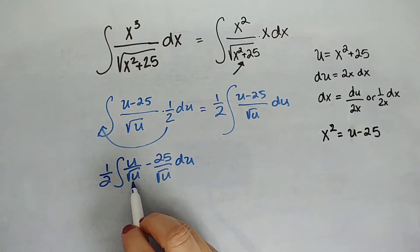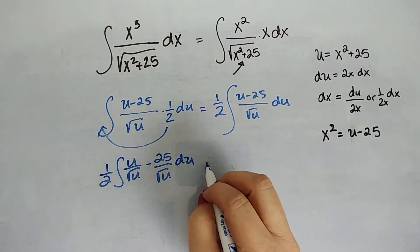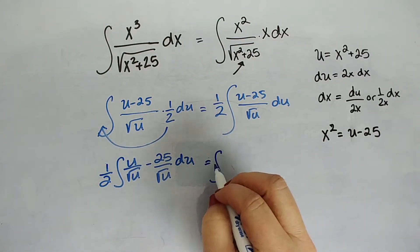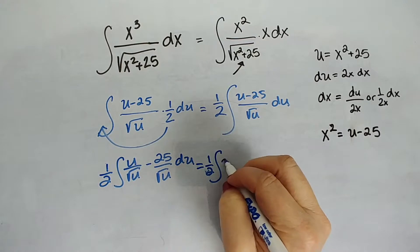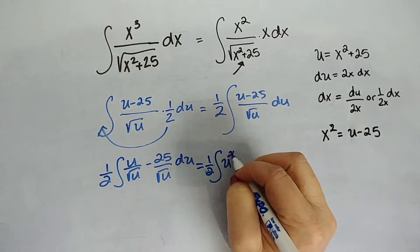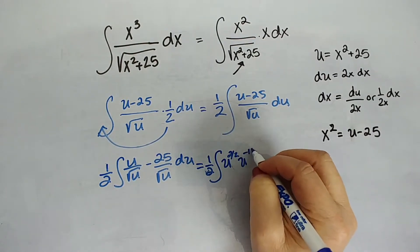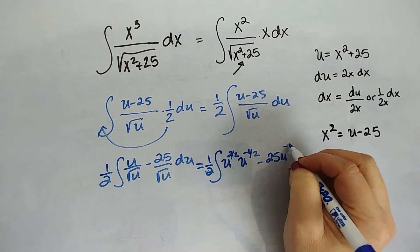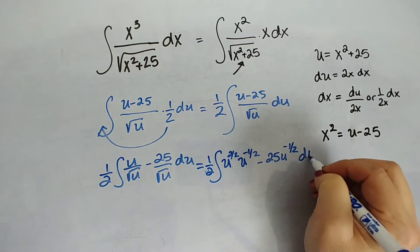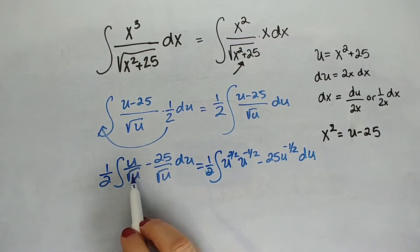Okay, so I like that. Now we're going to say, well, this u is really a u to the negative 1 half because it's in the denominator. So let's bring it up. Equals 1 half. u to the first, so really 2 over 2. u to the negative 1 half, minus 25 u to the negative 1 half du. Okay, I got that from bringing up any exponent in the denominator is negative.